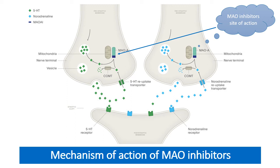Here we see the serotonergic nerve ending and the noradrenergic nerve ending, clearly indicating the release of their neurotransmitters and their action on postsynaptic membrane receptors. MAO inhibitors act by blocking the MAO-A enzyme in the nerve endings; therefore, the MAO enzyme is inactivated and not available for metabolism of serotonin and noradrenaline. This thereby increases the levels of these neurotransmitters in the brain and increases the activity of these two neurotransmitters in the depressive condition.